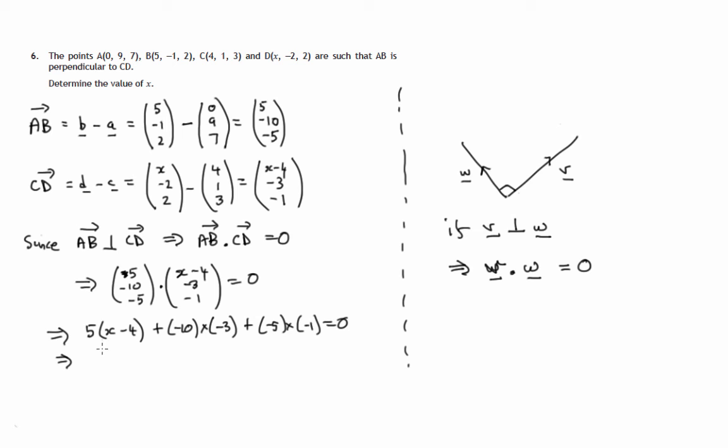Let's tidy up. 5 lots of X minus 20. It's getting rid of the brackets there. Negative 10 times negative 3 is 30. Negative 5 times negative 1 is 5. So we have 5X minus 20 plus 30 is 10, plus 5 is another 15. We subtract 15 from both sides and divide both sides by 5 to get X negative 3.